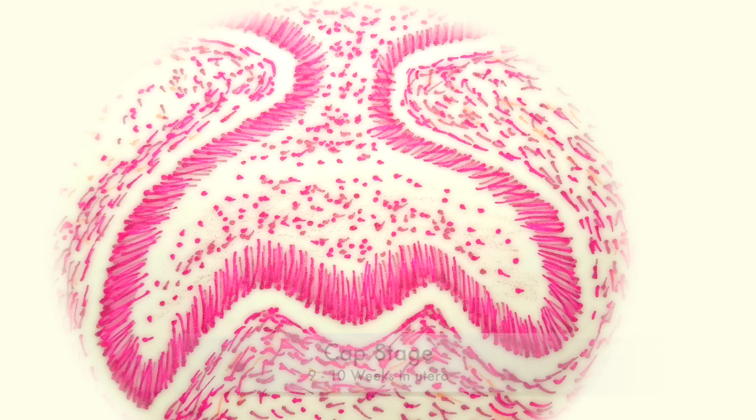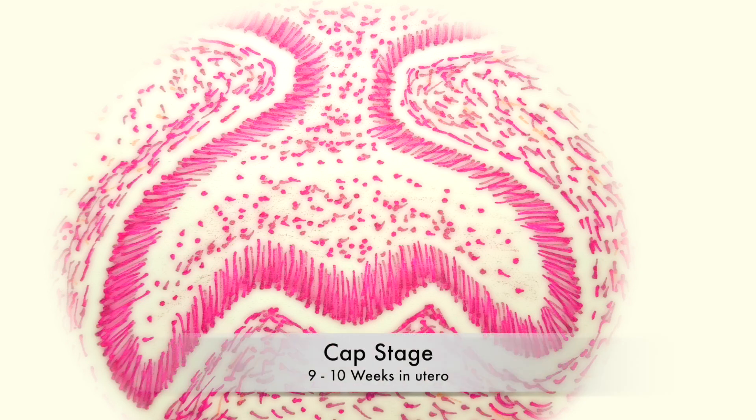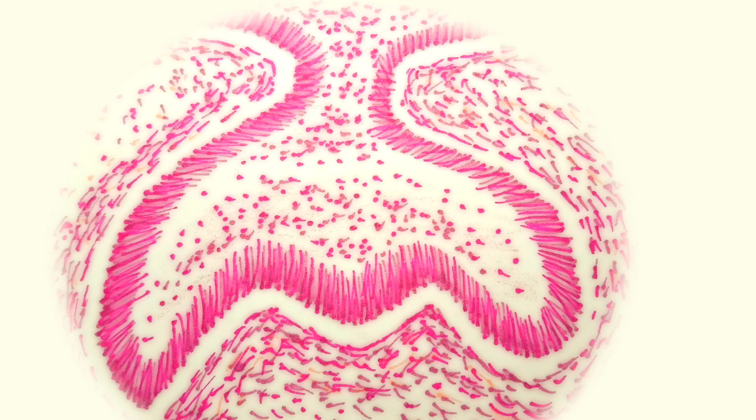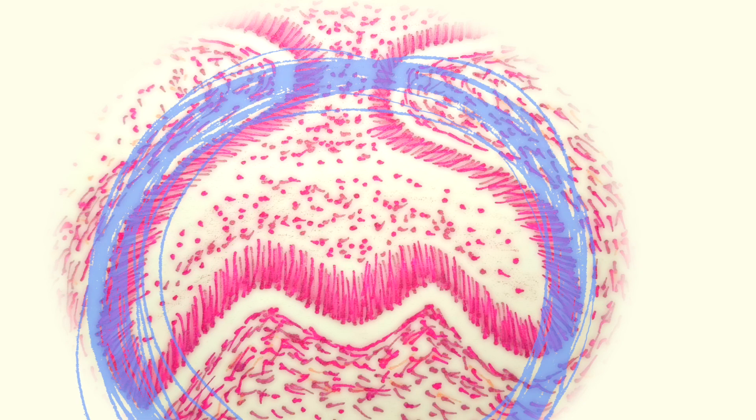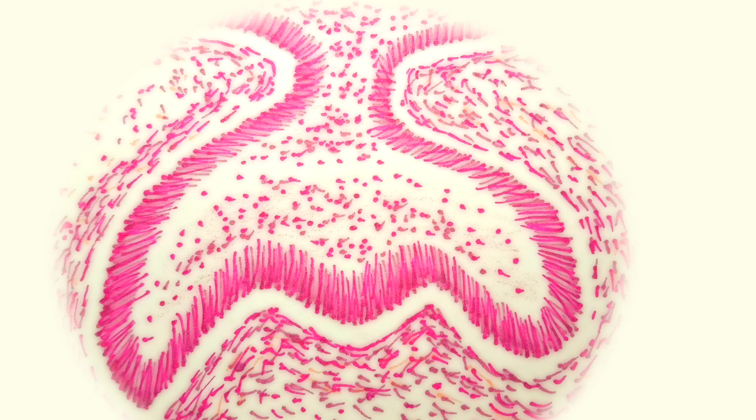The next stage is the cap stage where the tooth bud continues to proliferate but does not expand uniformly into a large sphere. The cap stage is characterized by the development of a shallow invagination on the deep surfaces of the bud outlining the basic shape of the tooth.